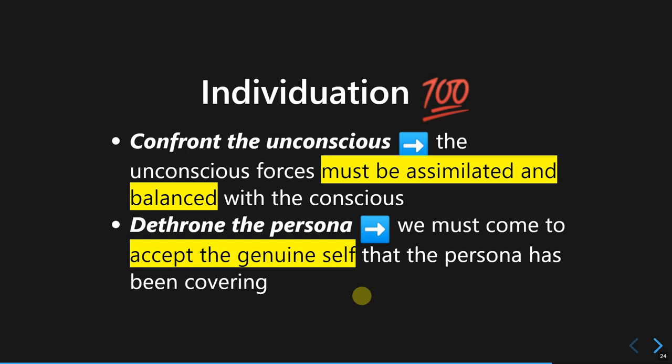The second strategy is transcending the persona. This is the realization where people recognize that the persona is not the true or real part of their selves, and they accept their genuine self — accepting who they truly are and what the persona has been covering.